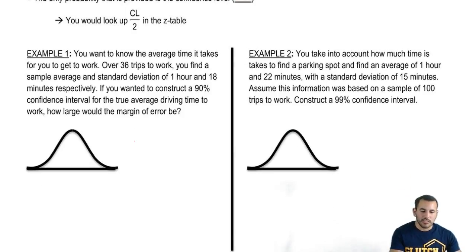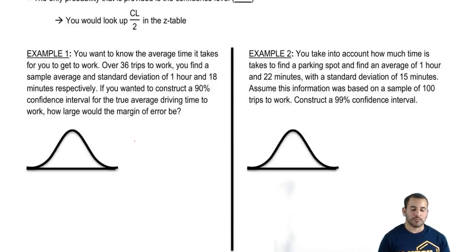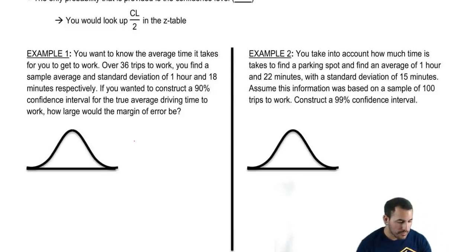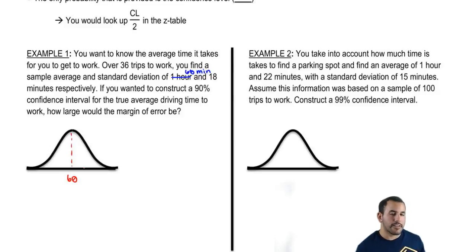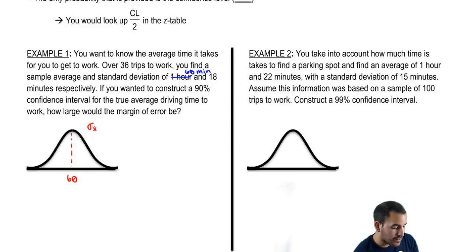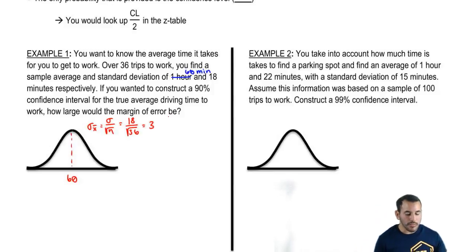Let's do some examples. You want to know the average time it takes to get to work. Over 36 trips, you find a sample average and standard deviation of 1 hour and 18 minutes respectively. If you wanted to construct a 90% confidence interval for the true average driving time to work, how large would the margin of error be? Our average is 1 hour, which is 60 minutes, and we have a standard deviation of 18. But since we're working with a sample, we need to get a standard error: standard deviation over the square root of n, which is 18 over the square root of 36 = 18 over 6 = 3. So our standard error is 3.